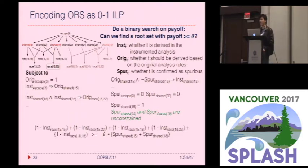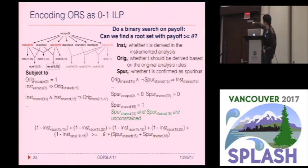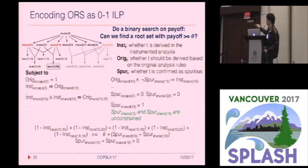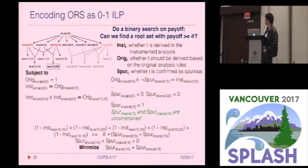Finally, we have a constraint encoding the payoff. The left-hand side expression represents the number of alarms expected to be resolved, and the other expression represents the size of the final rule set. Dividing them gives the payoff. There is a small issue: this constraint can be trivially satisfied if both sides are zero, so we add an additional constraint to fix this. We also have an objective that biases towards smaller rule sets.